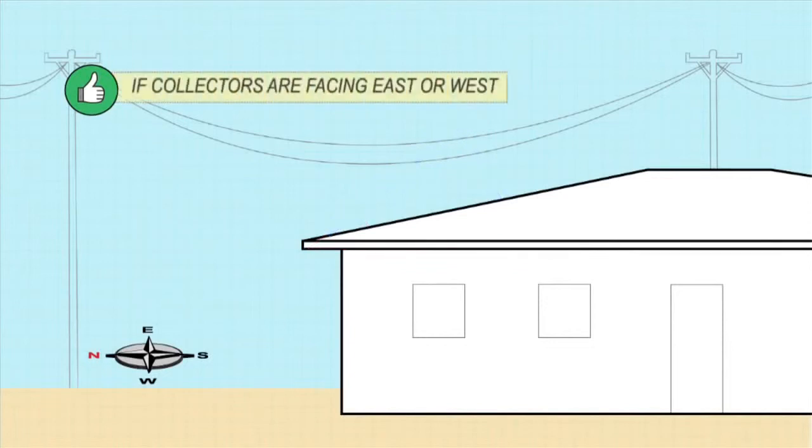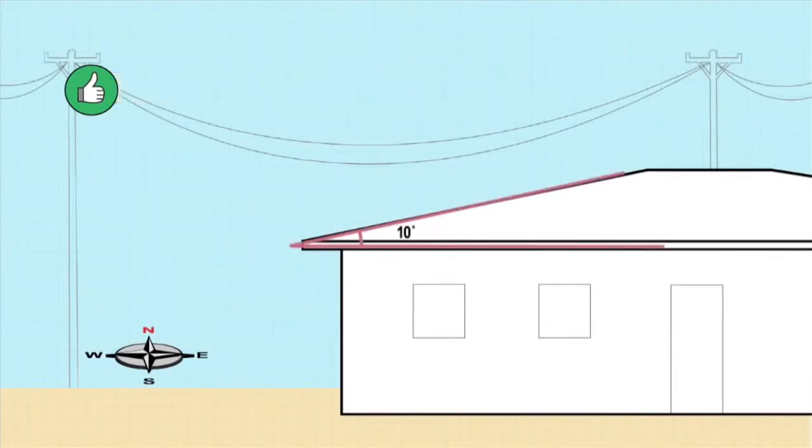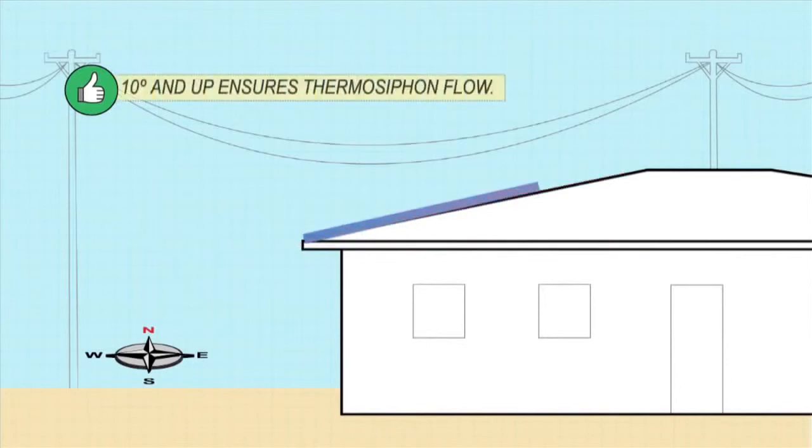If your collectors face due east or west, the lower the angle of inclination, the better. However, to allow thermosiphon flow, you must always keep the angle above 10 degrees.